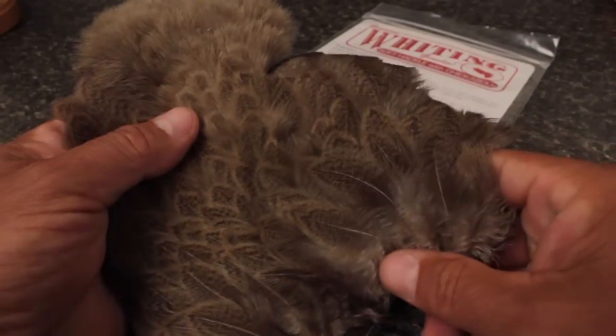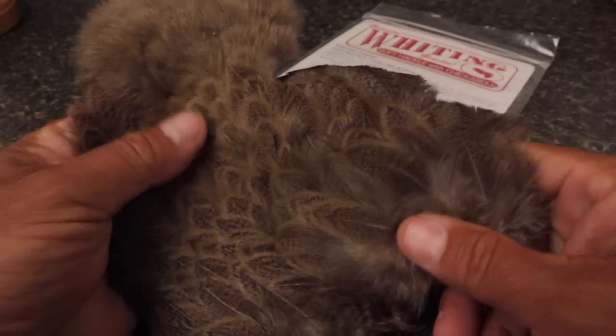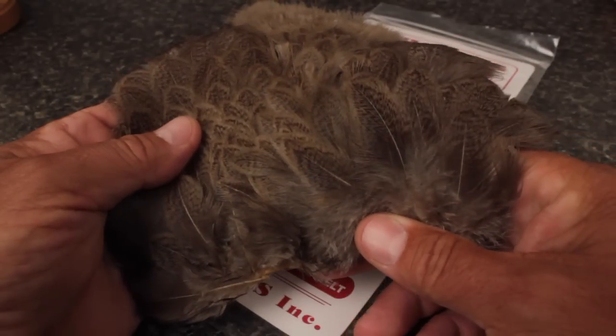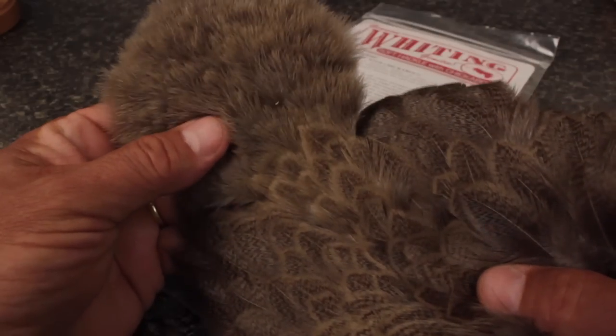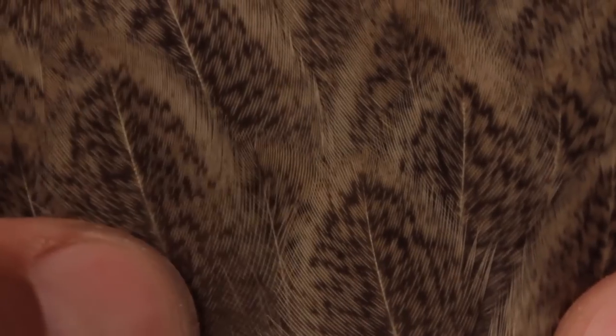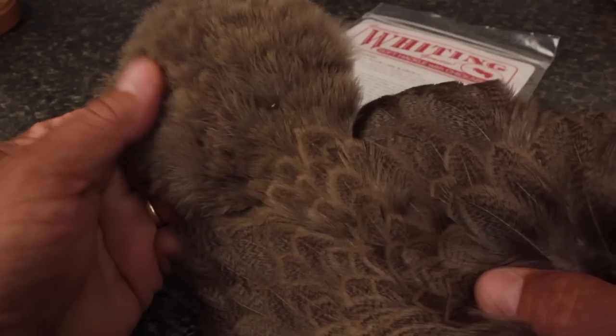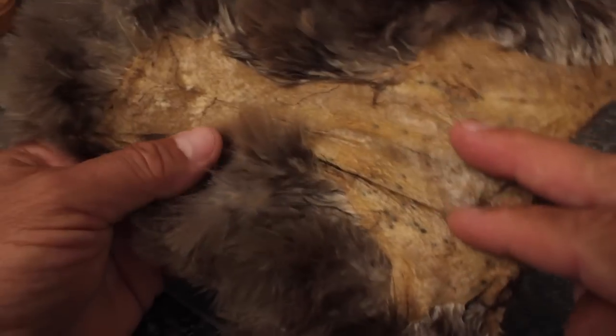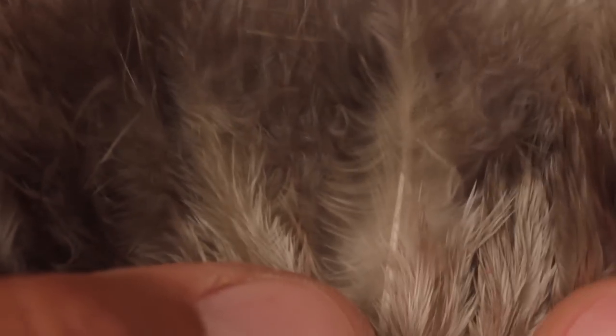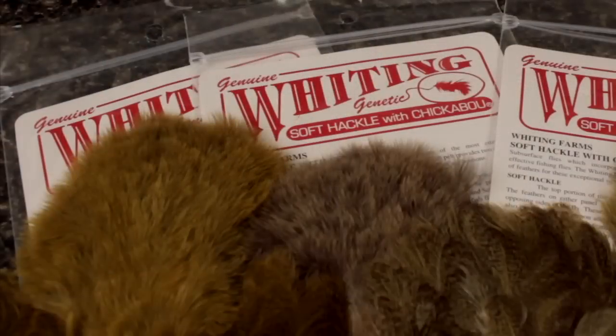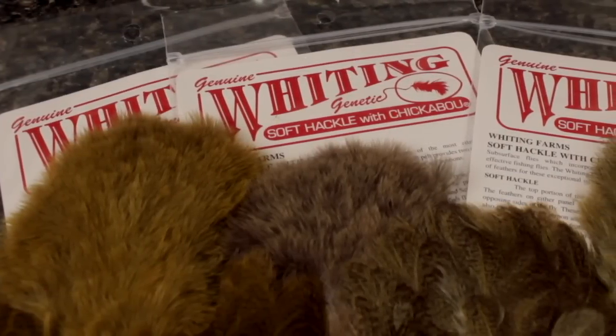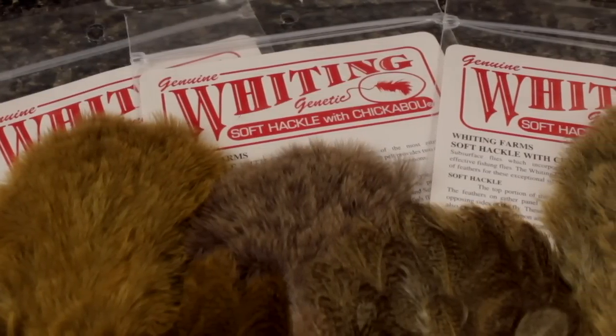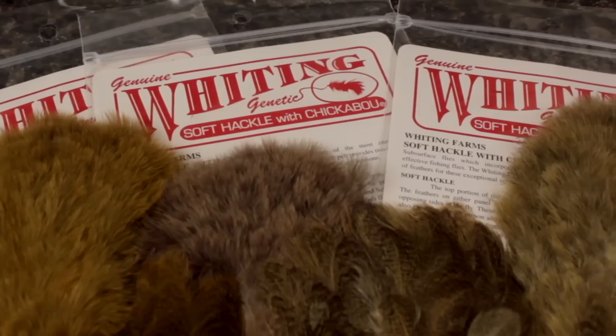Whiting Farms Brahma Hen Soft Hackle with a Chickaboo pelt is the only other material used on this fly. The soft hackle feathers are fairly large but have beautifully marked fine fibers. The Chickaboo pelt, which is attached to the skin, has feathers that resemble mini marabou plumes. Whiting offers this combo in a number of especially buggy looking colors. Here, I'm going to use white that's been dyed tan.